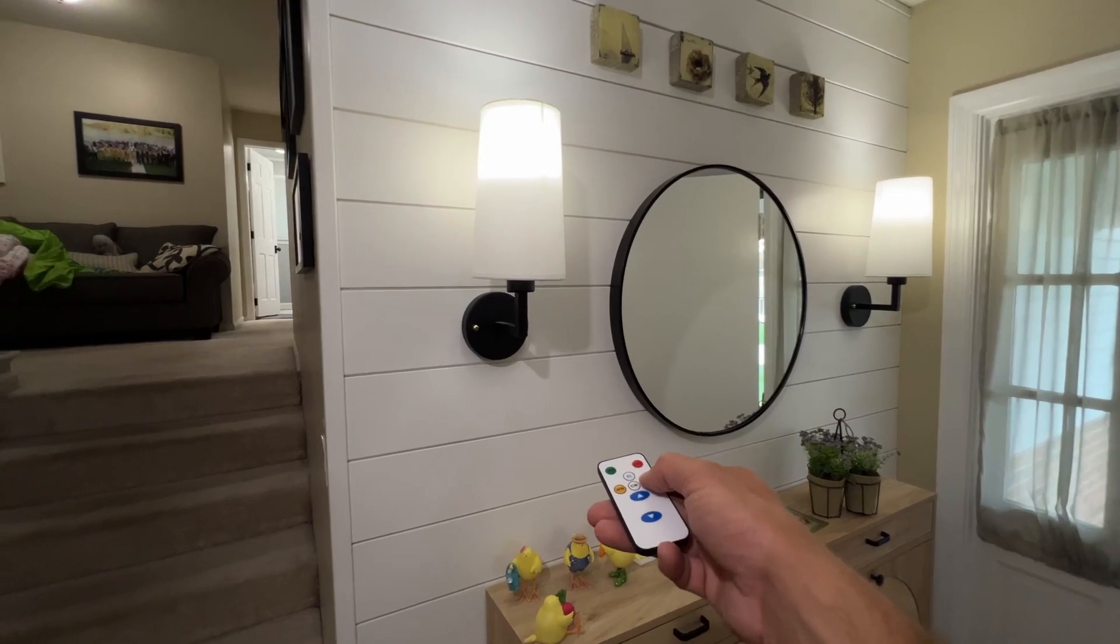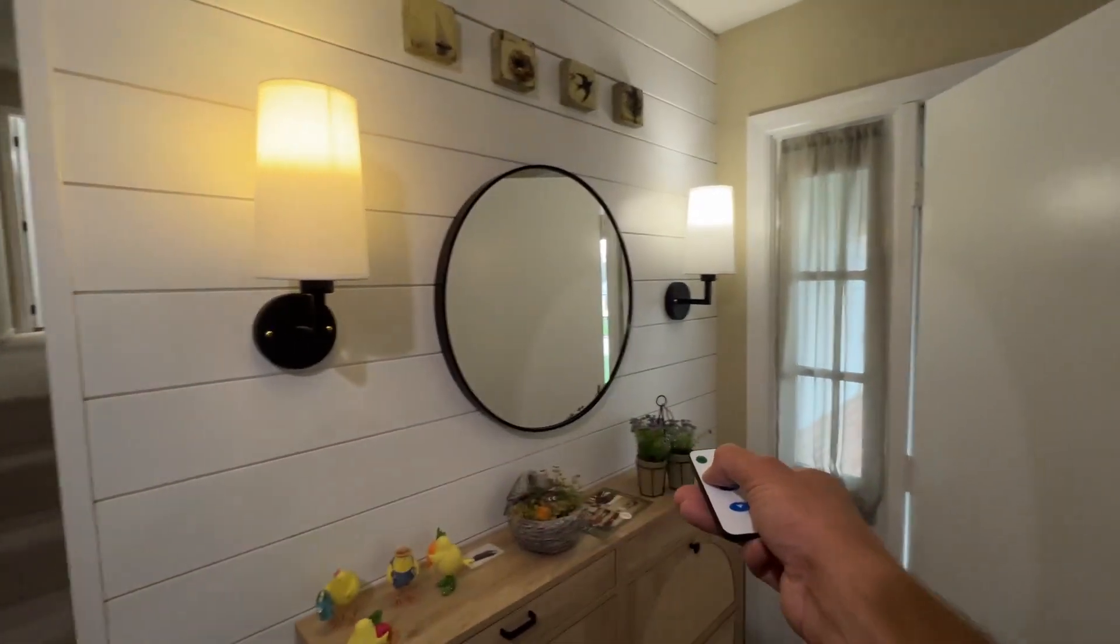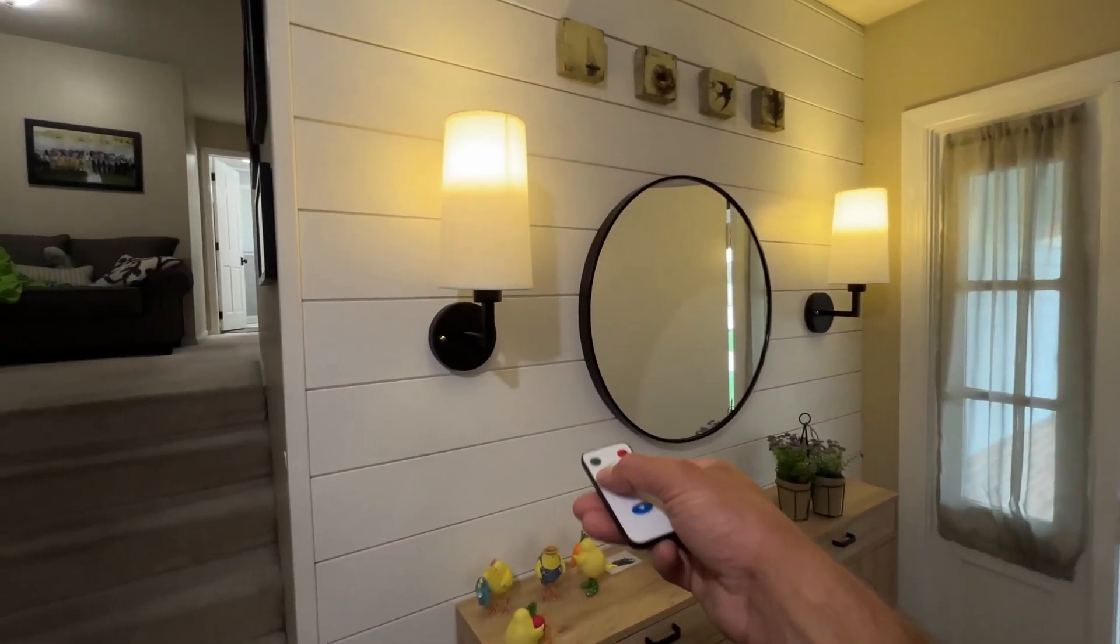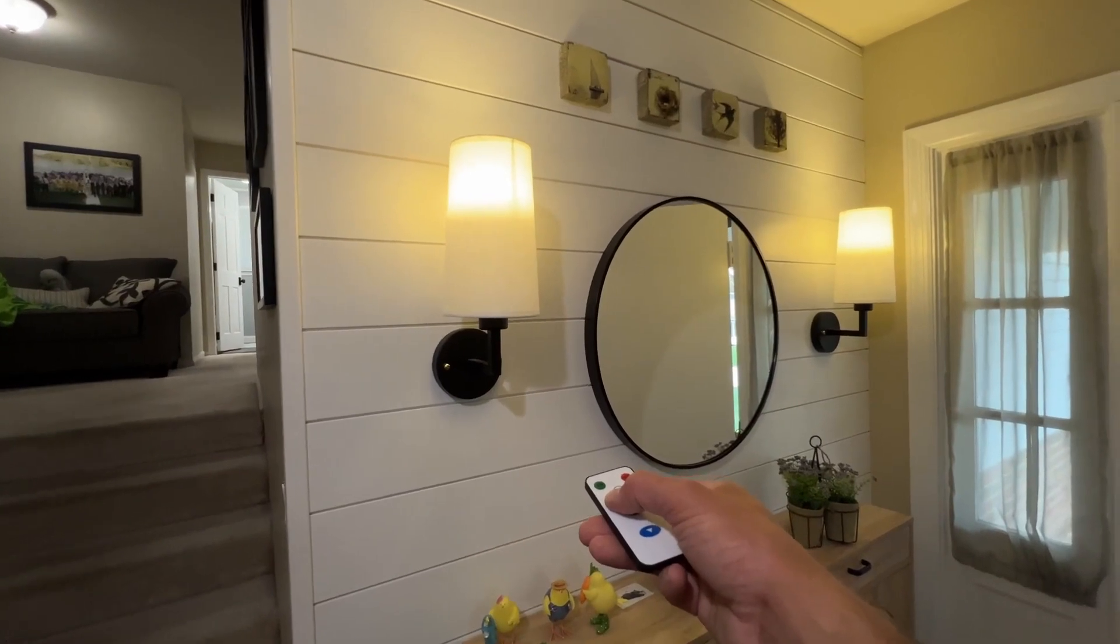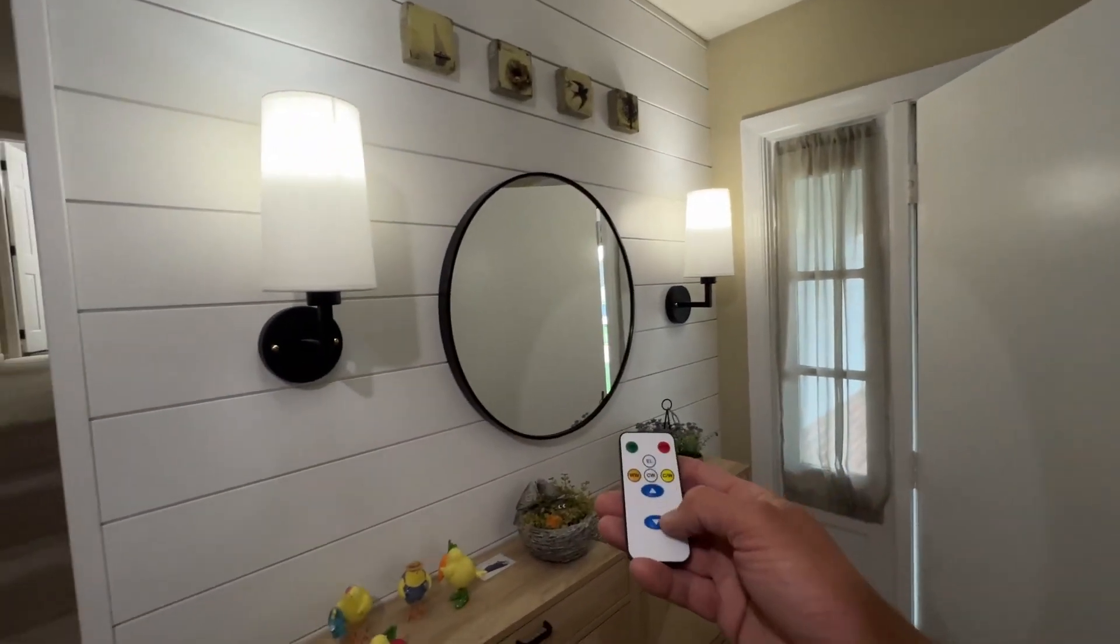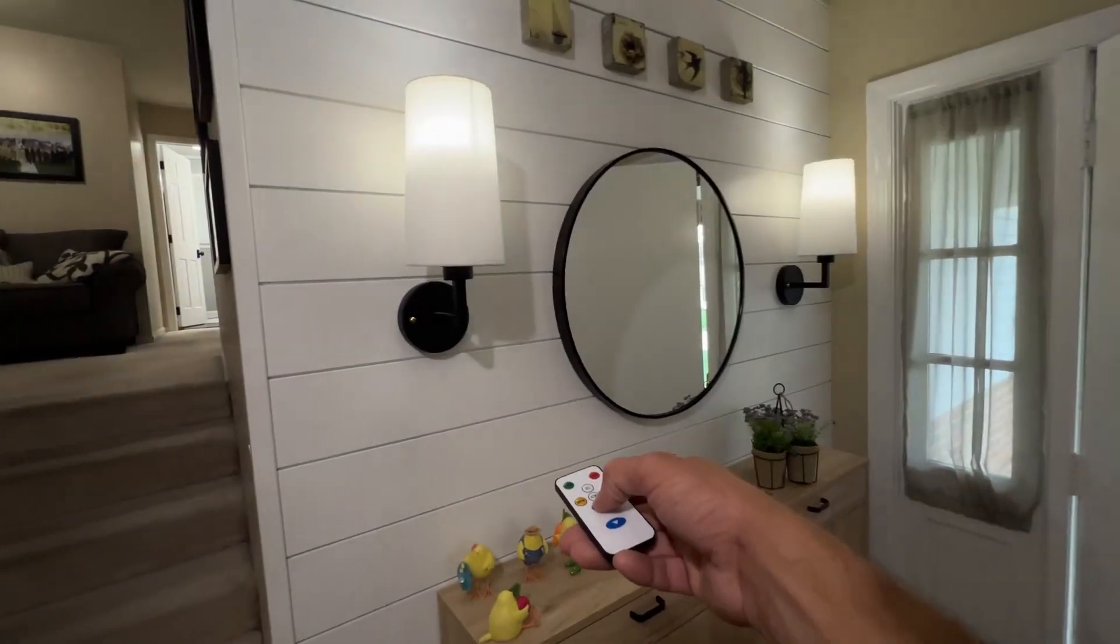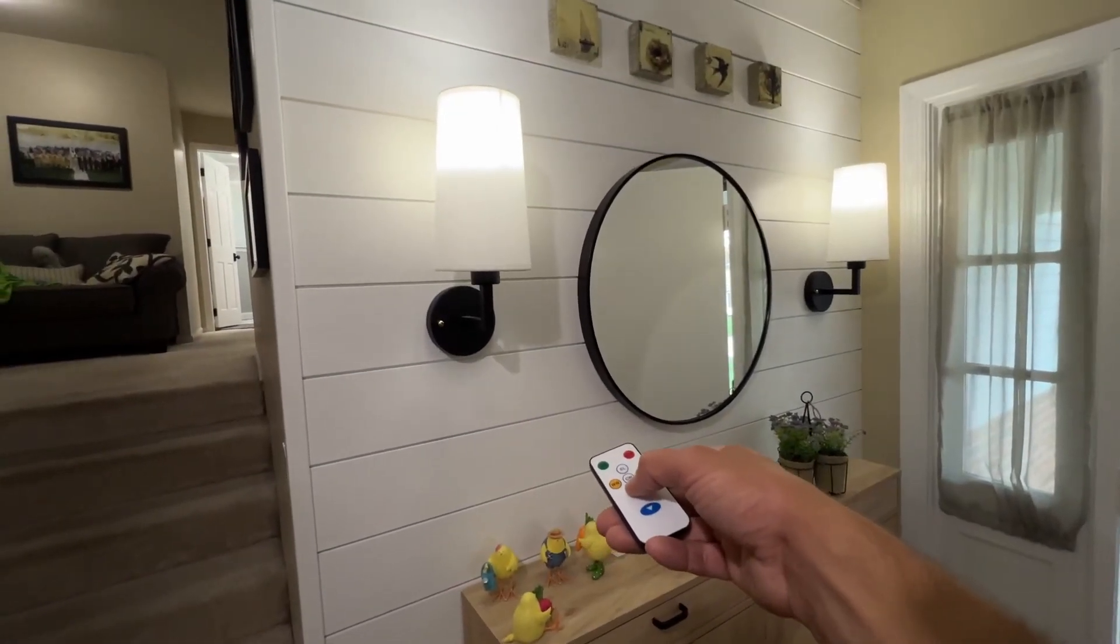And then if I hit this button, I go to the more yellow light. I think that sometimes works better for nighttime, and the white works better for daytime. They are dimmable as you can see.